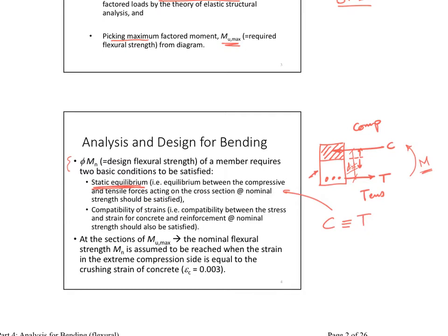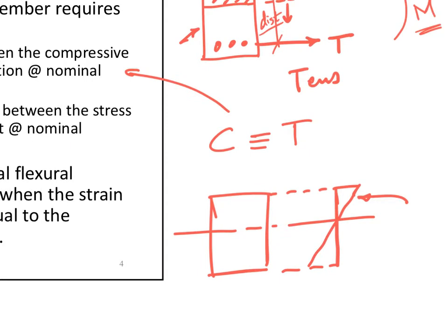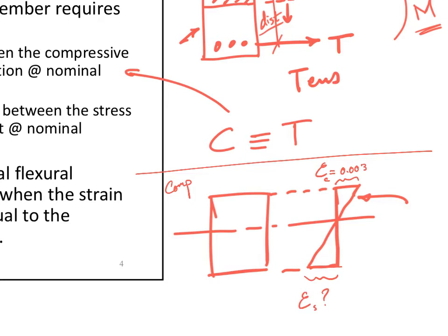The second very important assumption is compatibility of strains. For any section with a neutral axis, the strain is assumed to be a straight line passing through the neutral axis. Concrete crushes at one important value set by the code: the crushing strain at the extreme compression fibers is 0.003. We keep loading the beam under bending until failure — either crushing of concrete or yielding of steel.